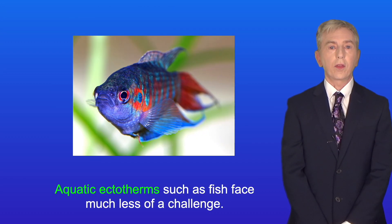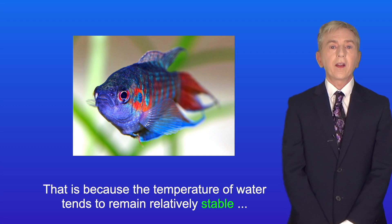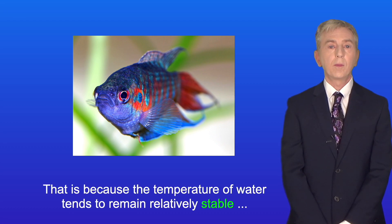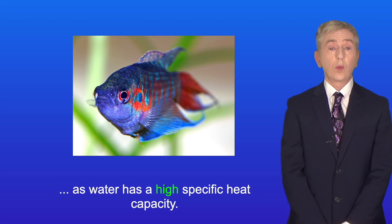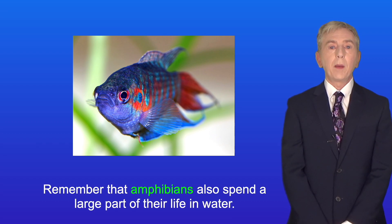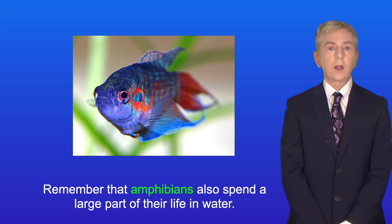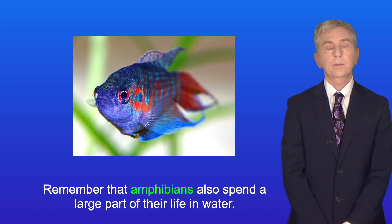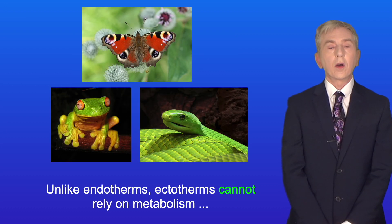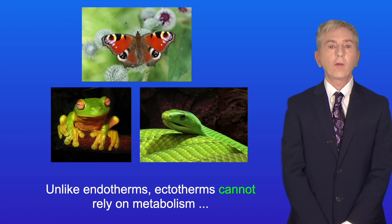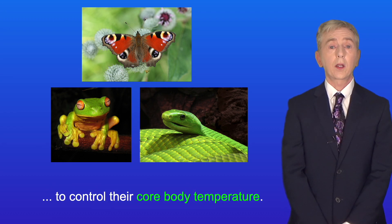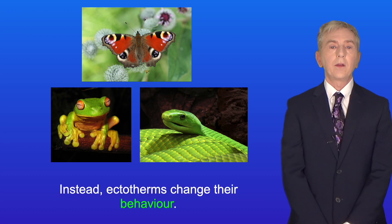Aquatic ectotherms such as fish face much less of a challenge. That's because the temperature of water tends to remain relatively stable, as water has a high specific heat capacity. Remember that amphibians also spend a large part of their life in water. Unlike endotherms, ectotherms cannot rely on metabolism to control their core body temperature.